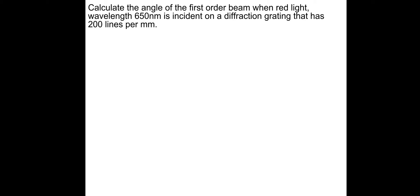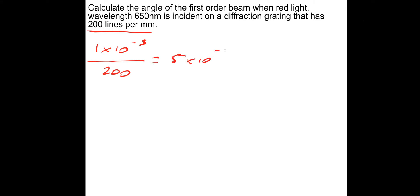Here's a question - pause and have a go, or use it as an example. Calculate the angle of the first order beam when red light of wavelength 650 nanometres is incident on a diffraction grating with 200 lines per millimetre. The first thing we need to do is calculate D: one times ten to the minus three divided by 200 gives five times ten to the minus six metres. Then we use D sin theta equals n lambda rearranged to find the angle.